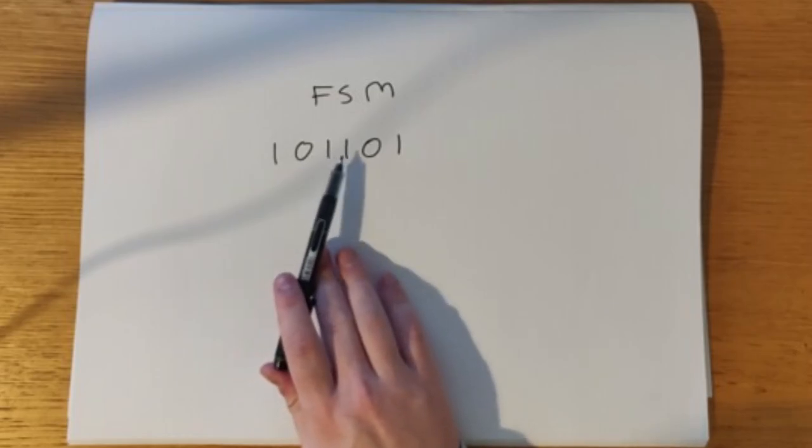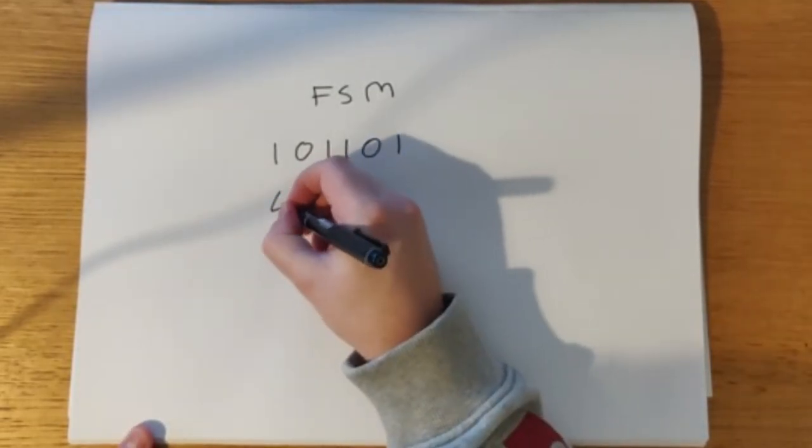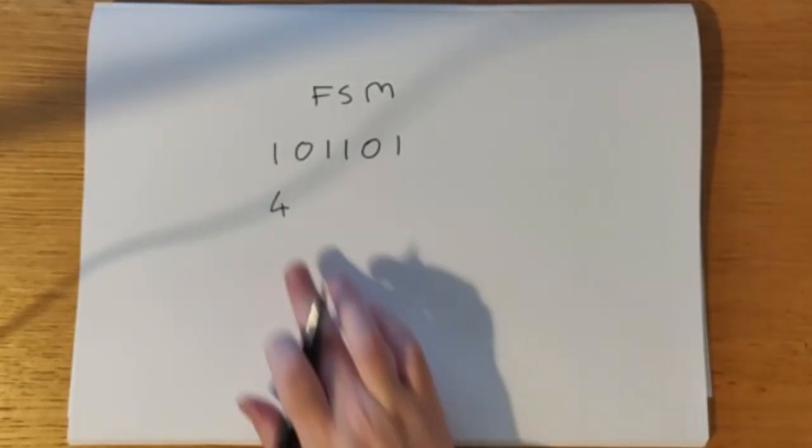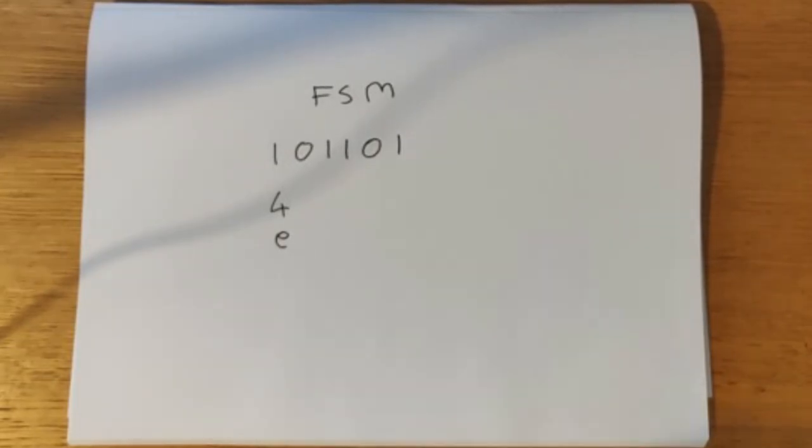So there is 1, 2, 3, 4 1s. So we have 4. The next thing we're going to do is realize that 4 is an even number. If I added another 1, there would now be 5 1s.